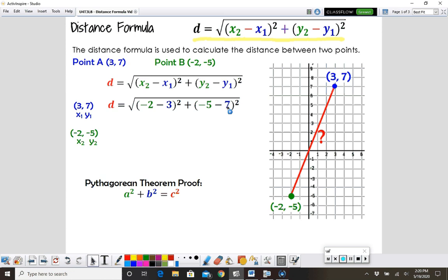All we do is just plug them in and solve. So negative 2 minus 3 is going to give us negative 5 squared, and then negative 5 minus 7 gives us negative 12 squared.